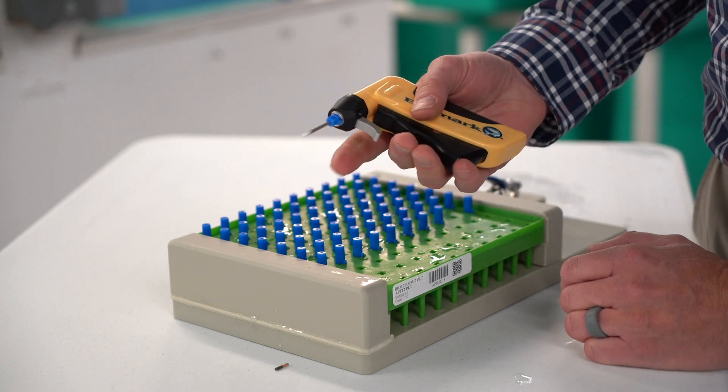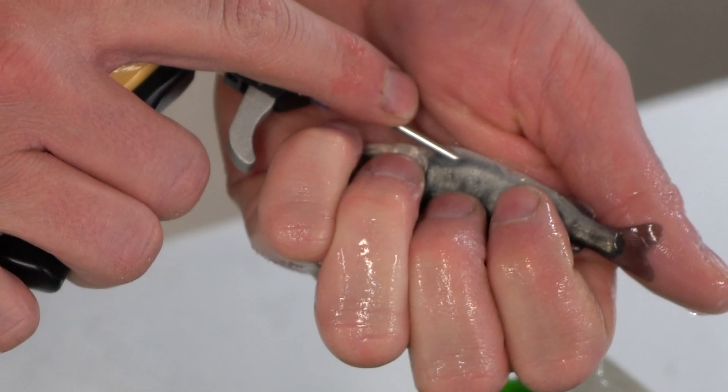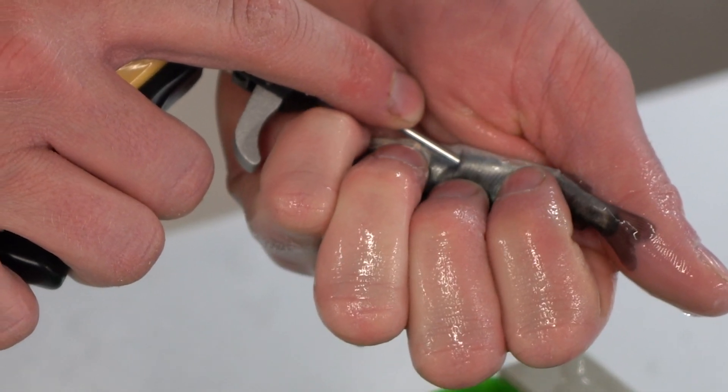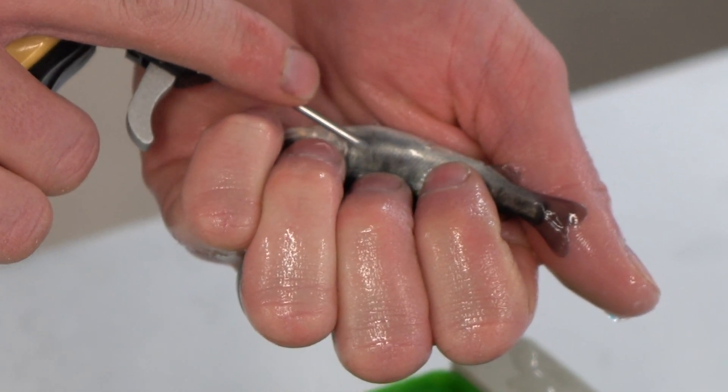Once the tag is injected, use the index finger to depress the silver trigger, ejecting the needle. Note the placement of the index finger on the needle. This helps stabilize the implanter while tagging and prevents the silver ejection trigger from being depressed during tagging.